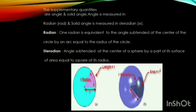The supplementary quantities in the SI system are angle, measured in radian, and solid angle, measured in steradian. One radian is the angle subtended at the centre of a circle by an arc equal to the radius of the circle. One steradian is the angle subtended at the centre of a sphere by a part of its surface of area equal to the square of its radius.